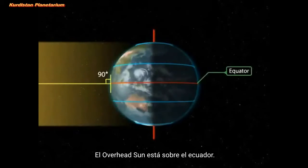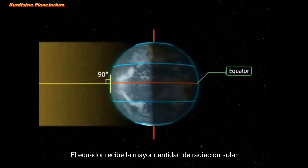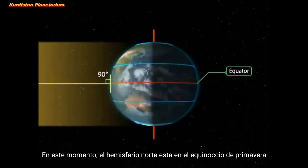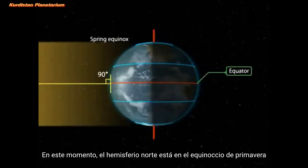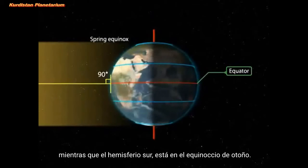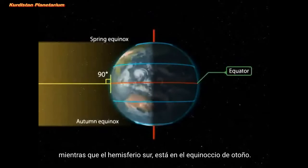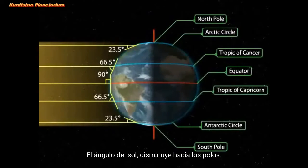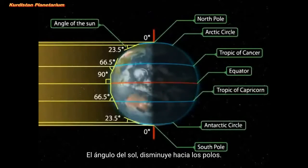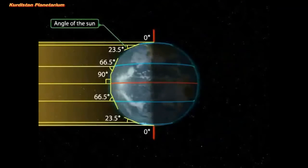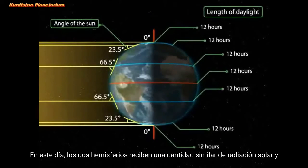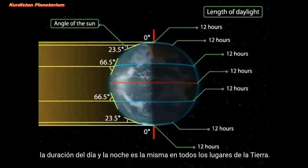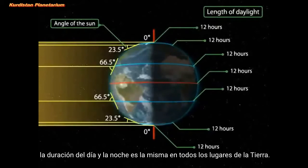Spring equinox on the 21st or 22nd of March: the overhead Sun is over the equator. The equator receives the largest amount of solar radiation at this time. The northern hemisphere is in the spring equinox while the southern hemisphere is in the autumn equinox. The angle of the Sun decreases towards the poles. On this day, the two hemispheres receive a similar amount of solar radiation, and the length of day and night is the same at all places on the earth.